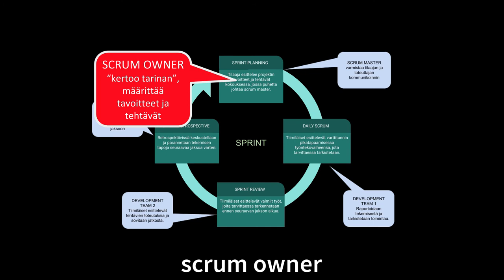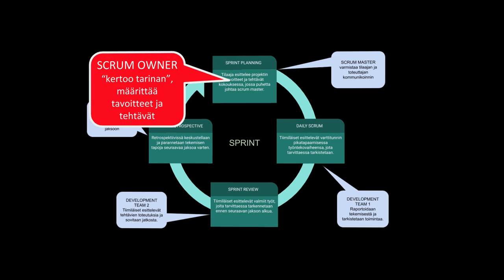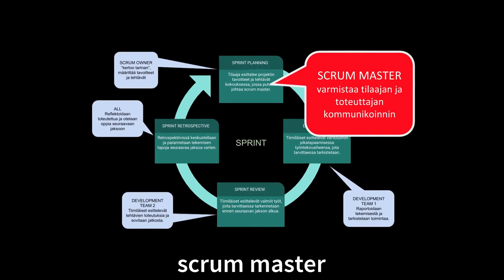Scrumissa on kolme pääroolia, joista ensimmäinen luontuu mainiosti opettajalle. Scrum Owner eli tuoteomistaja on projektin tilaaja, joka määrittelee mitä tavoitellaan ja miksi. Tilanteen mukaan hän voi osallistua myös Sprintien ja tehtävien kuvaamiseen. Scrum Master suomennetaan useimmiten tiiminvetäjäksi, joka vetää ja ohjaa niin sanottua kehittäjätiimiä, joka toteuttaa projektin ja kaikki sen Sprinteissä toteutettavat tehtävät.